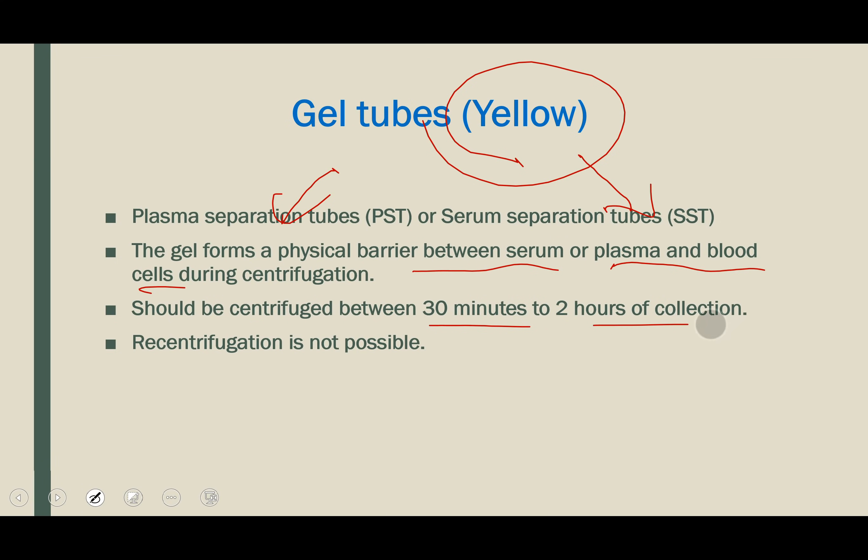The gel forms a physical barrier between serum or plasma and blood cells during centrifugation. You should centrifuge between 30 minutes and two hours of collection — do not keep the gel tube for more than two hours. Unlike the plain red-capped vial, you cannot re-centrifuge a gel tube because of the gel barrier.